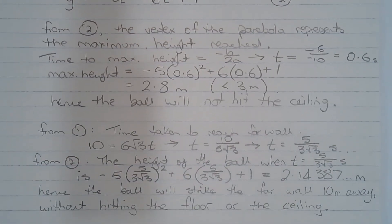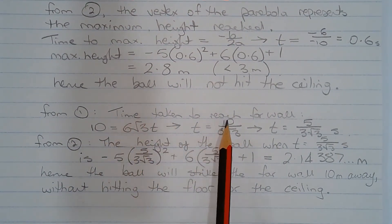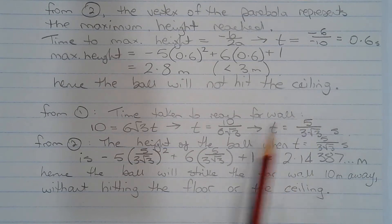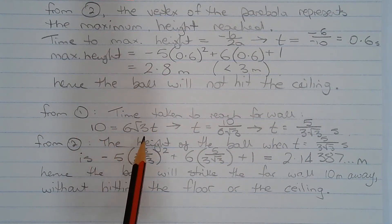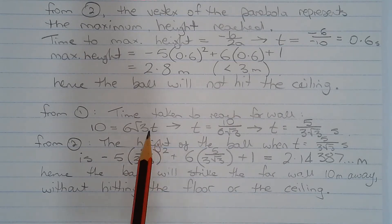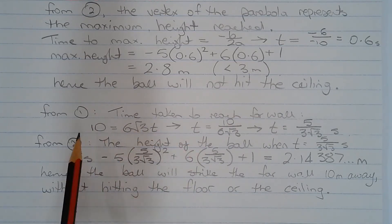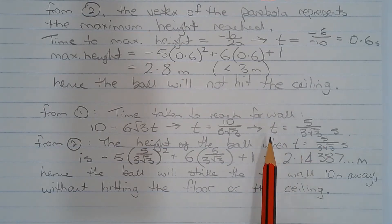Now from equation number 1, the time taken to reach the far wall, which is 10 meters away, can be found by solving the equation 10 equals 6 root 3 multiplied by t, making t the subject of the formula by dividing both sides of the equation by 6 root 3. And we get t is equal to 5 over 3 root 3 seconds.